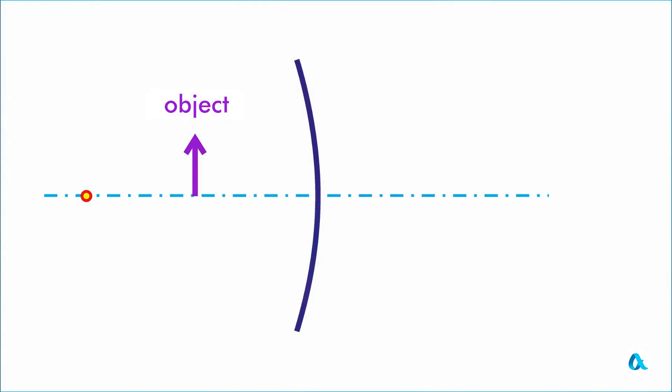We will draw convenient rays to explain the experiment on a diagram. The first ray from the object is parallel to the mirror's axis. After reflection, it passes through the focus point. The second ray goes from the object to the optical center of the mirror and reflects at the same angle to the optical axis.